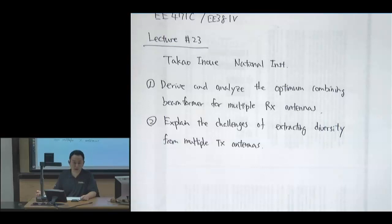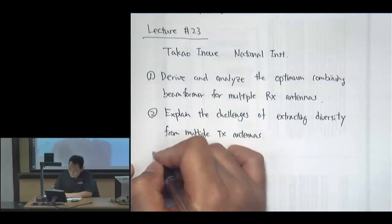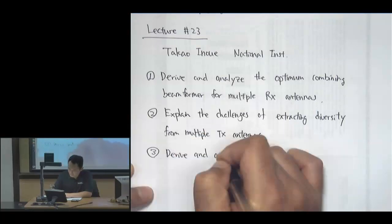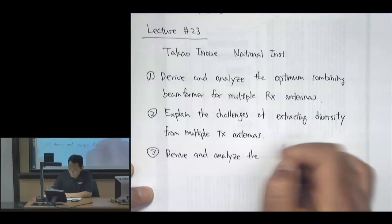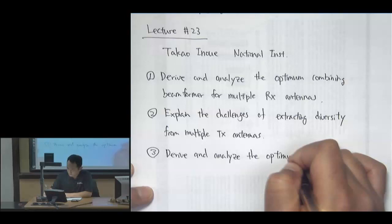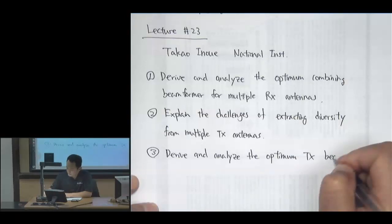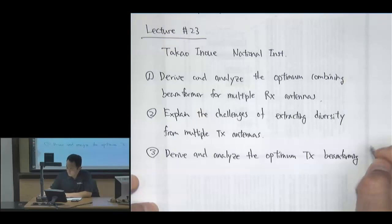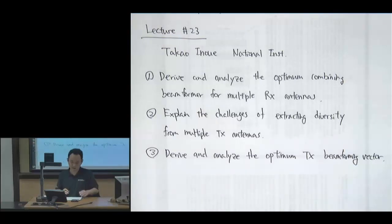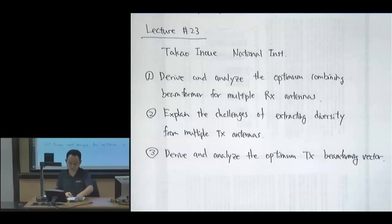Diversity refers to the benefits that come with the use of multiple antennas in communication systems. The third objective is to derive and analyze the optimum transmit beamforming vector — how do you optimize the use of multiple transmit antennas? We'll talk about several schemes, with multiple antennas at both the receive and transmit sides.